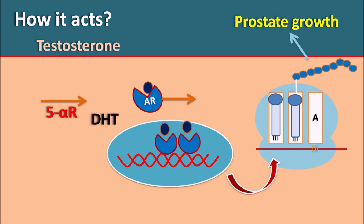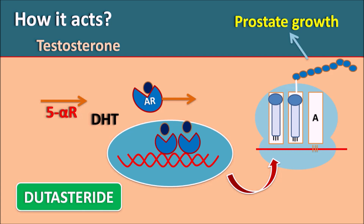To treat BPH, the actions of testosterone should be inhibited. One important target is the 5-alpha reductase enzyme, which is inhibited by dutasteride, thereby inhibiting androgenic actions on the prostate gland.